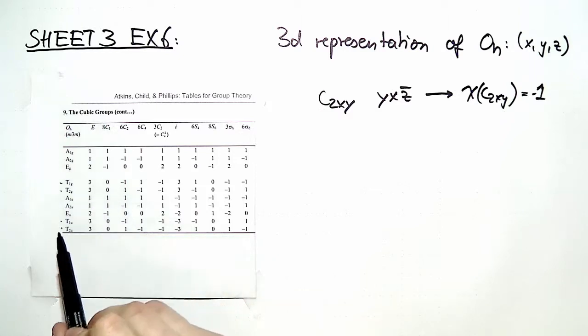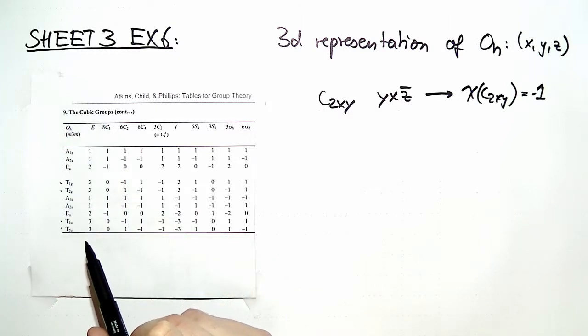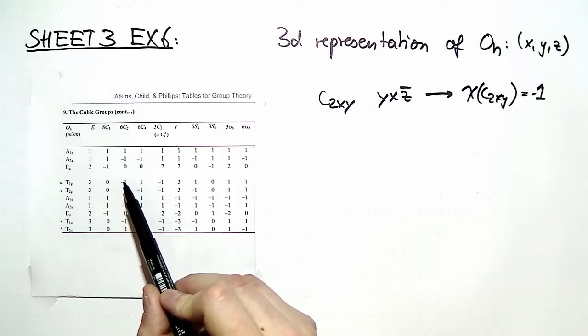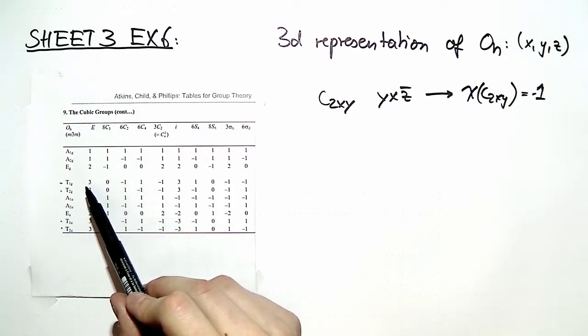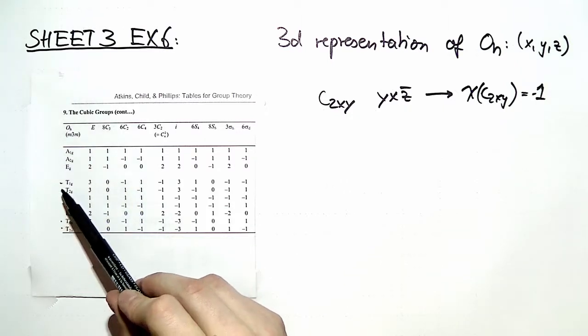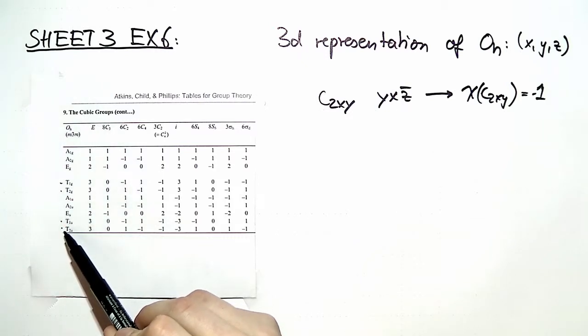So we reduced our possible 3D representations to two. We only have those with three-dimensional representations, and we have only those which have a character of minus one in the c2 group. So we have t1g and t1u as possible options.